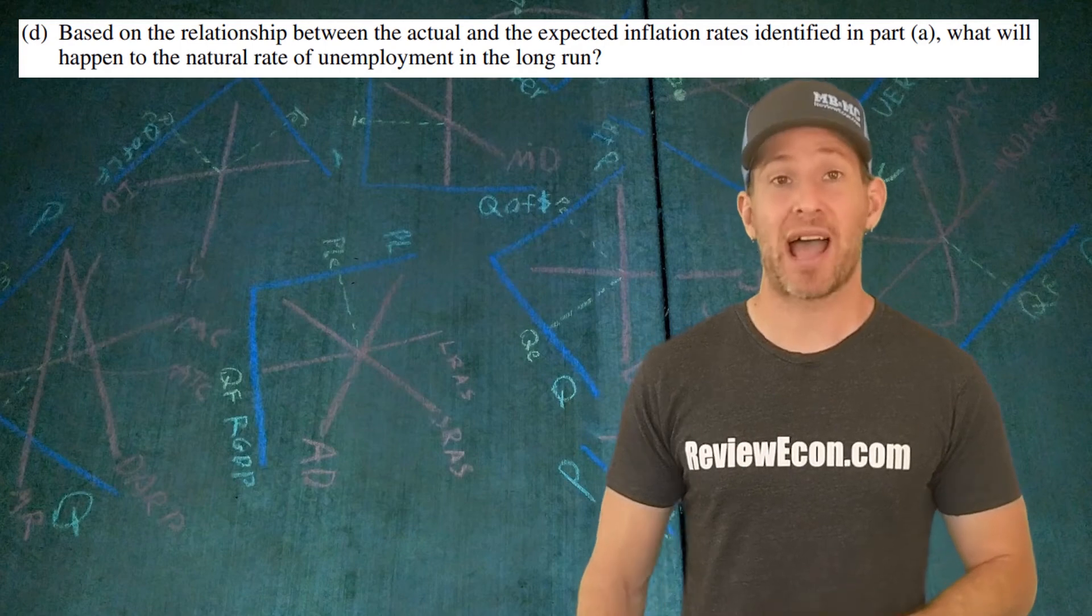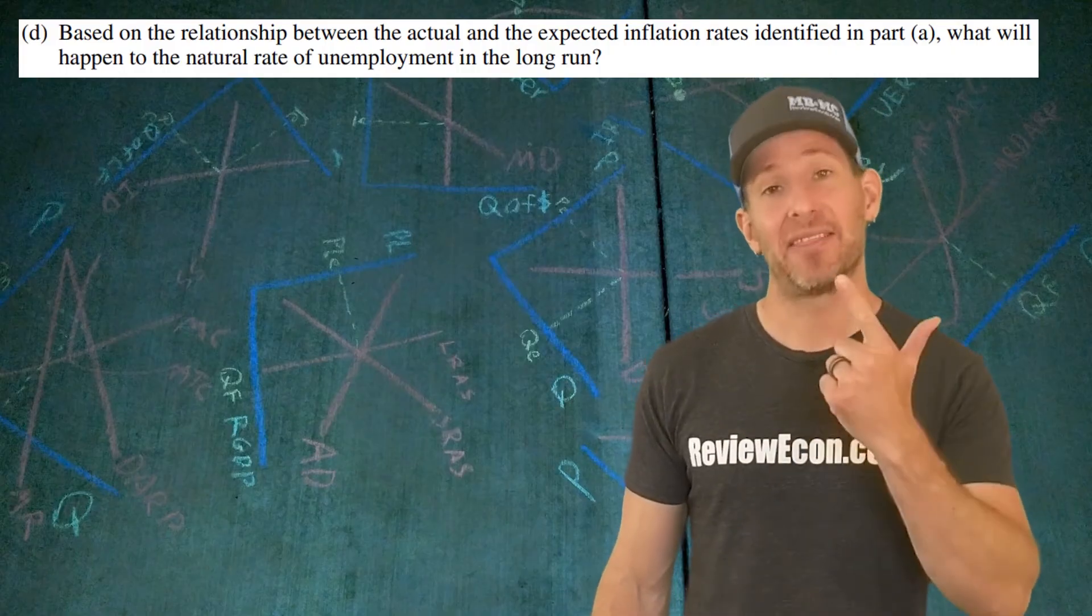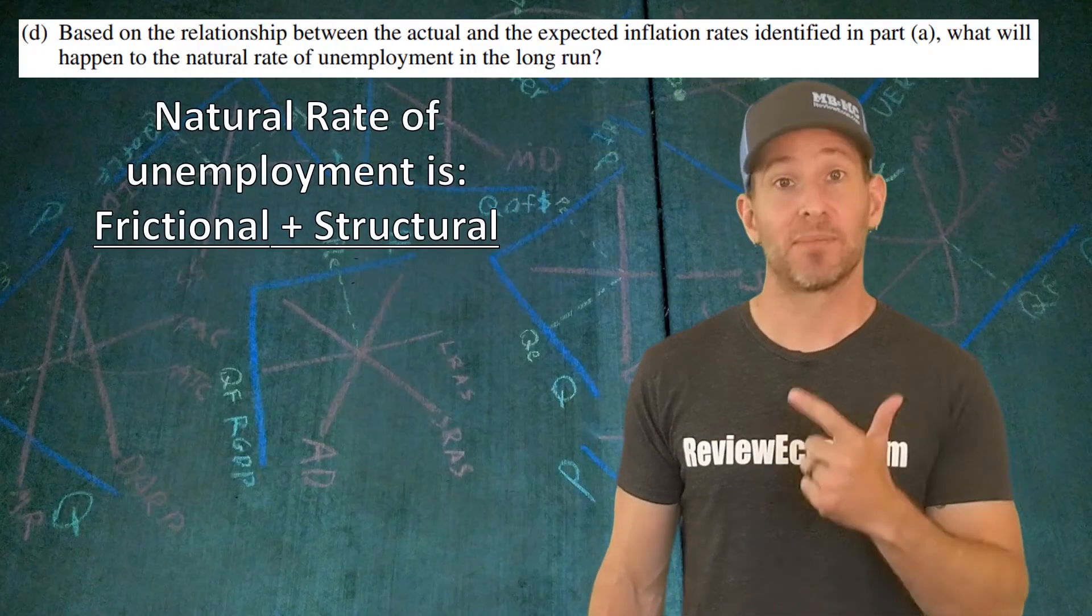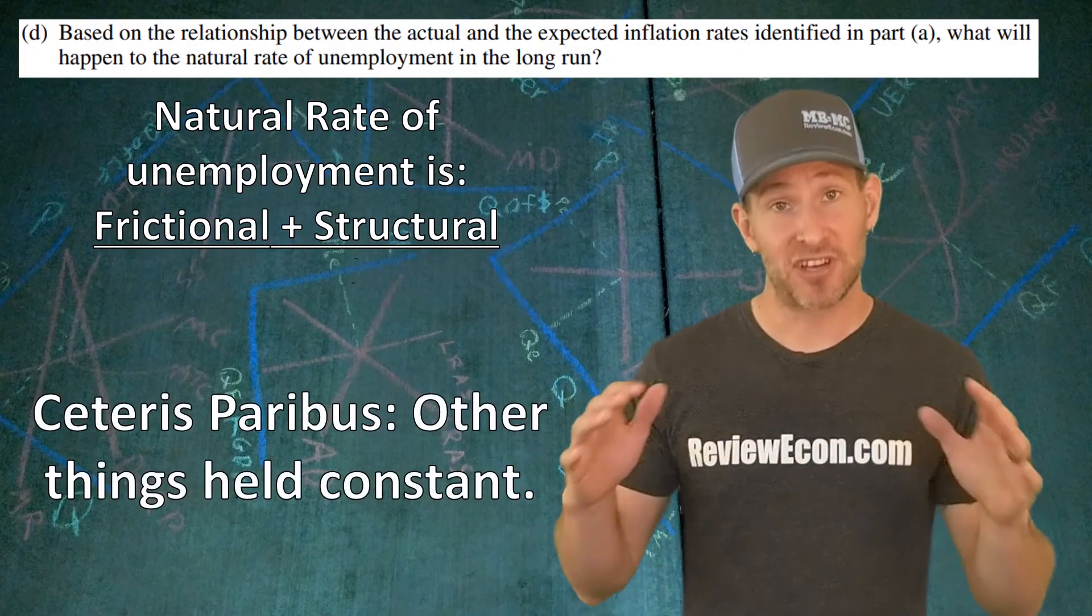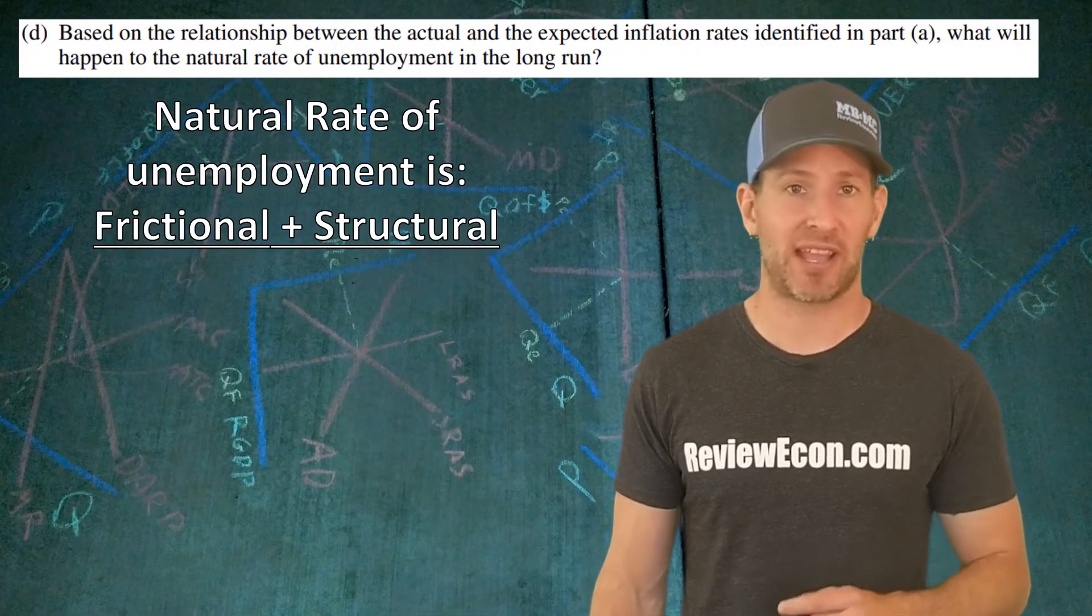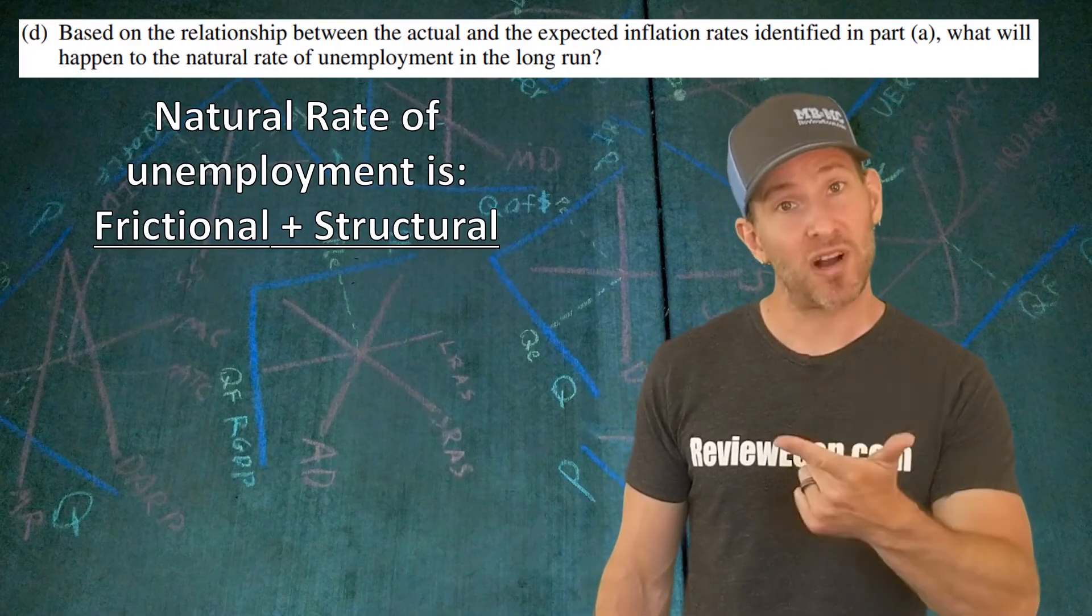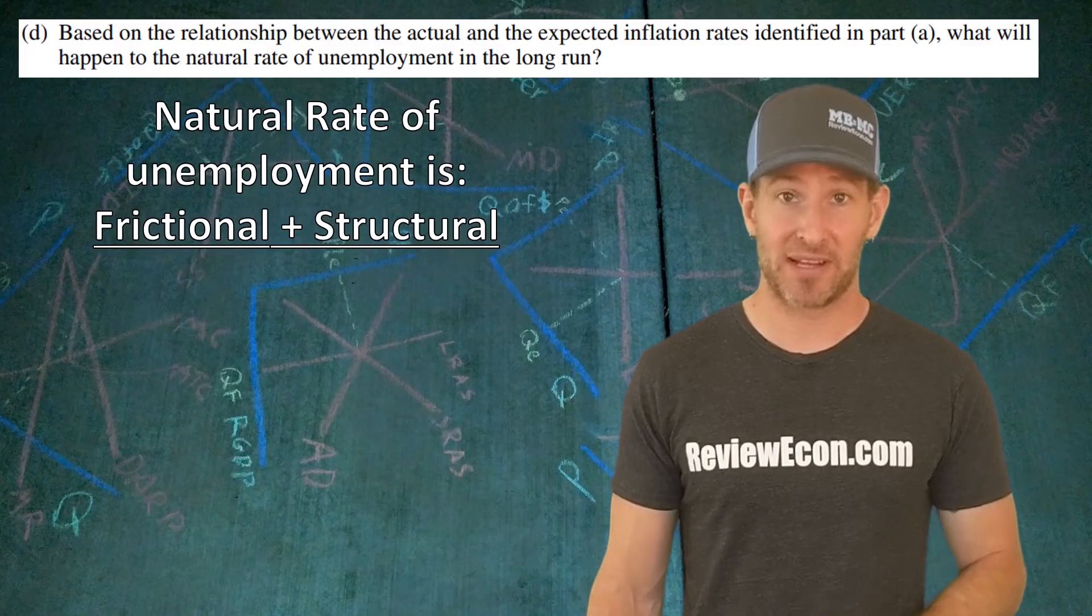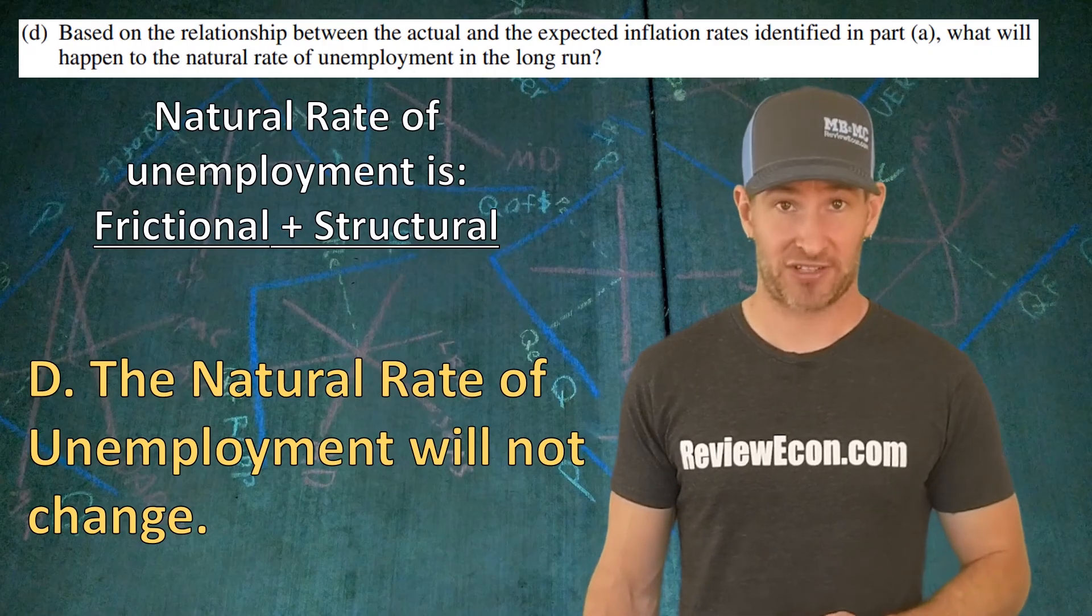For part D, we have to say what will happen to the natural rate of unemployment as a result of the difference between the expected inflation rate and the actual inflation rate. Remember the natural rate of unemployment is frictional unemployment plus structural unemployment. A basic principle of AP Economics questions is ceteris paribus. If it's not in the question, it doesn't exist is what I often tell my students. Since there's nothing in this question that indicates there would be a change in frictional unemployment or structural unemployment, there is no reason to believe that the natural rate of unemployment is going to change. So to get this point, simply state that. The natural rate of unemployment will not change. You've got your point.